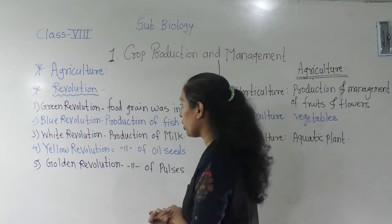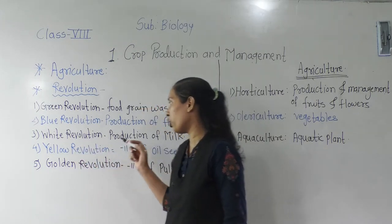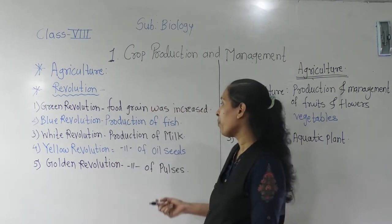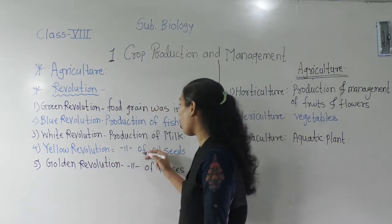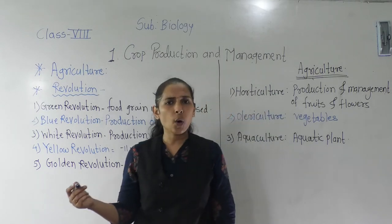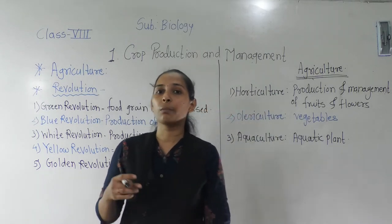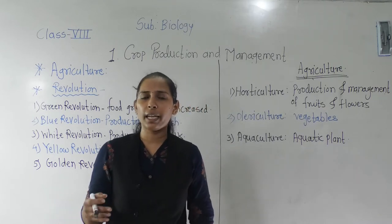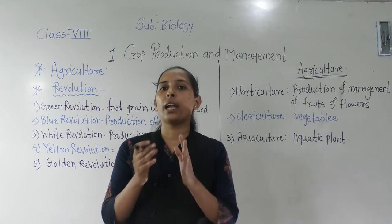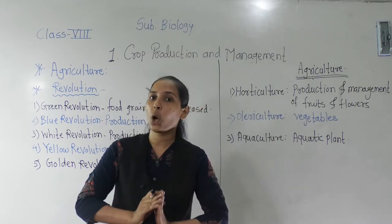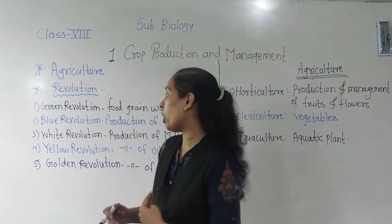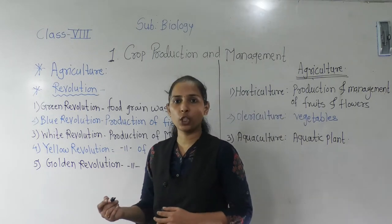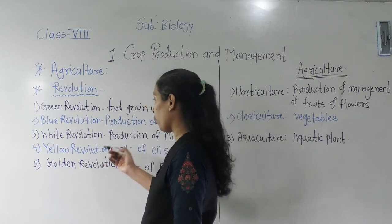The next revolution that happened in the agriculture field is the Yellow Revolution. In the Yellow Revolution, the production of oil seeds increased. What are oil seeds? We can say groundnuts, mustard, sesame, coconut, sunflower, soybean, and so on. These are certain types of oil seeds from which we get cooking oil. The production of oil seeds getting increased is what we call the Yellow Revolution.